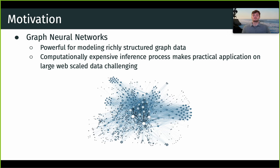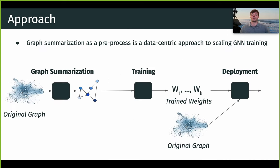Scaling strategies for GNN learning is a highly active and productive area of research, and there are really great distributed inference and learning techniques out there. But in this work we focus on a complementary data-centric approach to scaling GNN training. Specifically, we first summarize the training graph of a GNN that is then provided to a training process that may still leverage distributed training techniques, but then the learned weights are used to perform inference on the original full-sized graph.